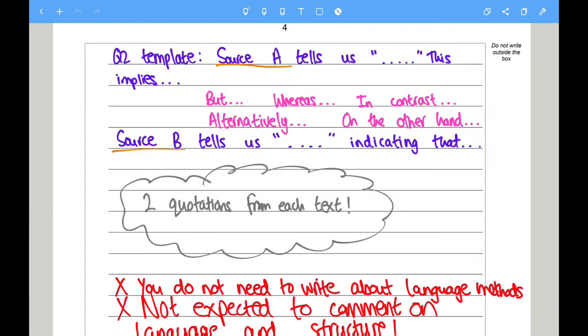Here we have a Question 2 template. So you may begin with something like: Source A tells us... this implies... and then you explain what this shows or what this suggests. And then you may want to counter or show the opposing side by using 'but,' 'alternatively,' 'whereas,' 'in contrast,' and make this comparison with Source B.